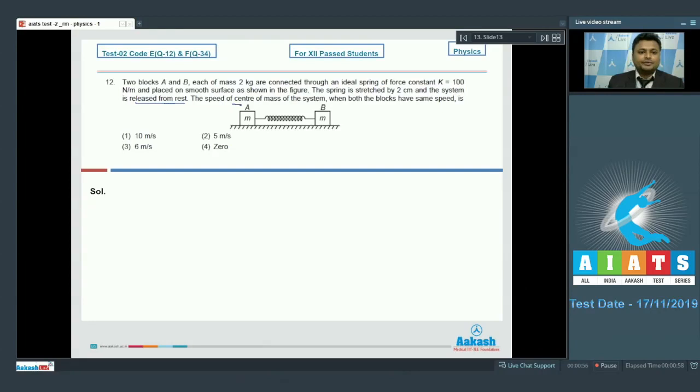The spring is stretched by 2 centimeter and the system is released from rest. The speed of center of mass of the system when both blocks have same speed is what? Now since we know very well that the net external force acting on the block is equal to m into acceleration of center of mass.